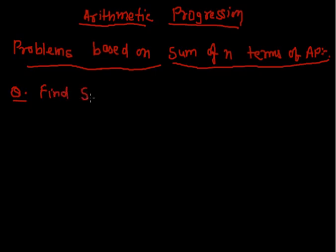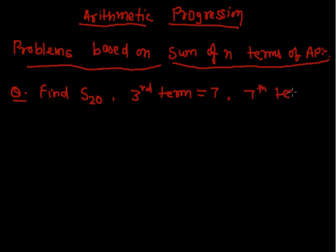Find the sum of first 20 terms, which we can denote as S20, of an AP in which the third term is equal to 7 and the seventh term is 2 more than thrice the third term. So we have to find the sum of first 20 terms of this AP.